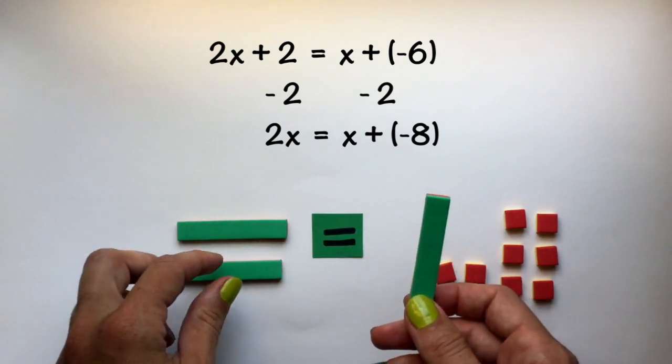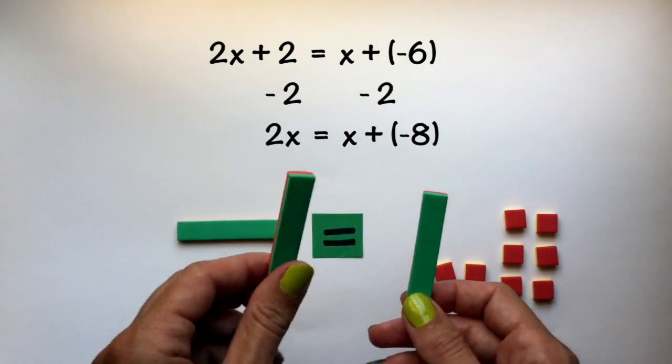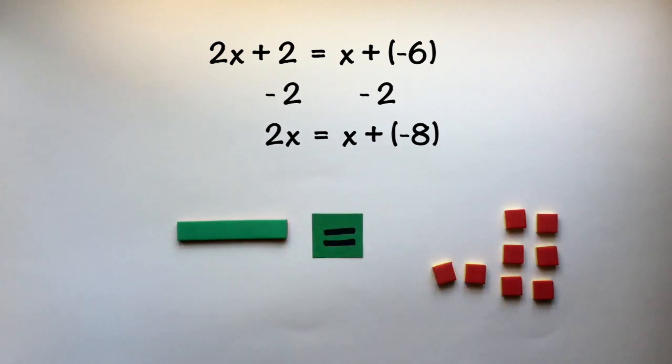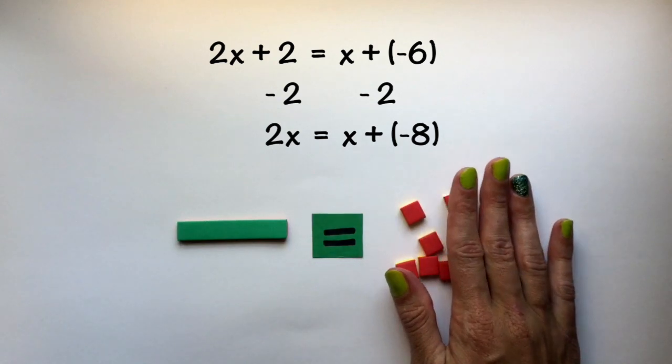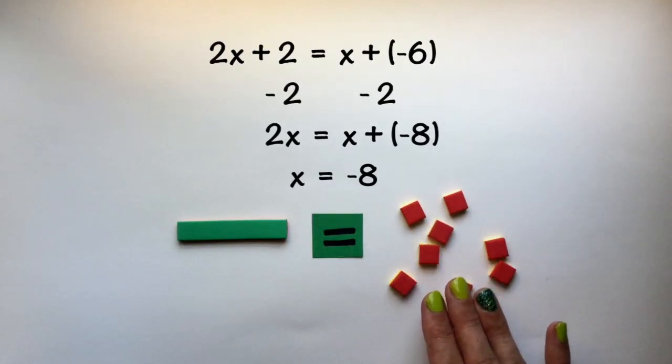If I'm taking away x from this side of the equation, I need to also take away x from this side of the equation. And I am left with x is equal to negative 8.